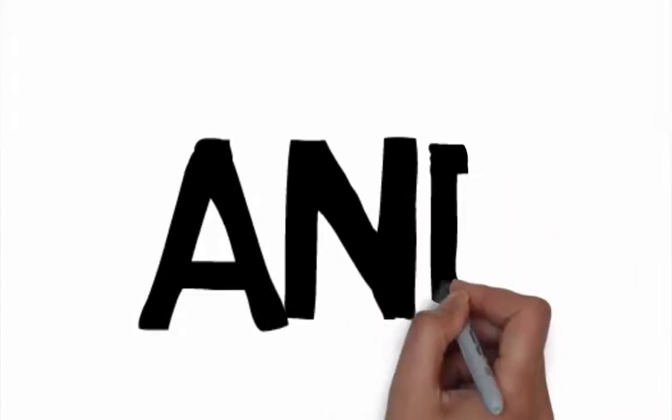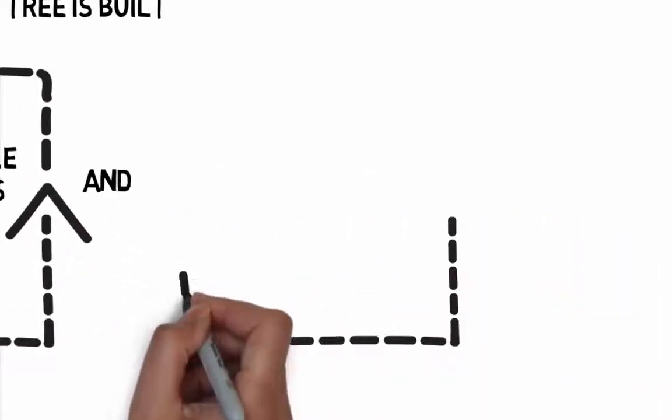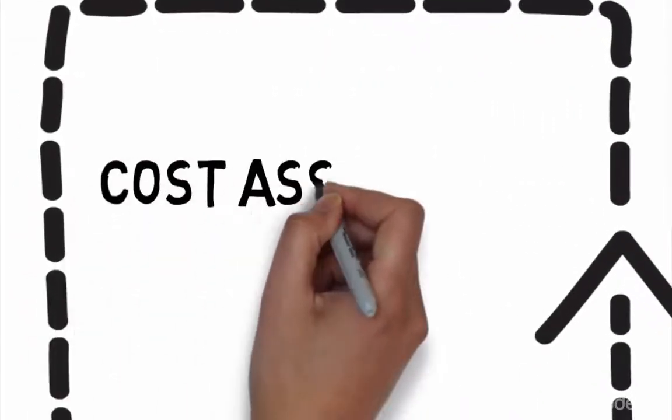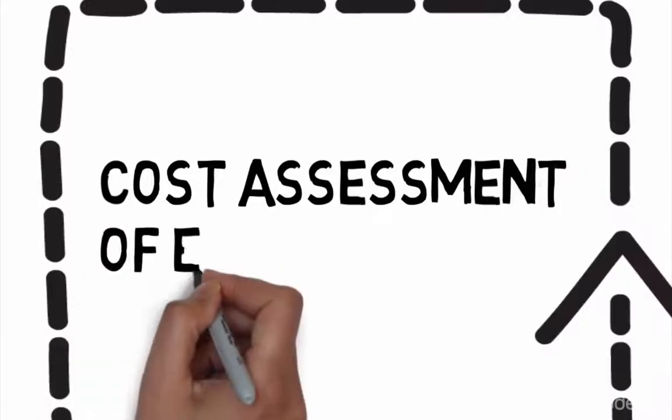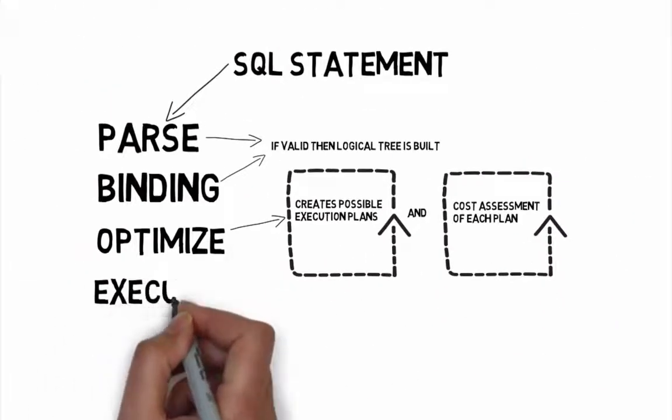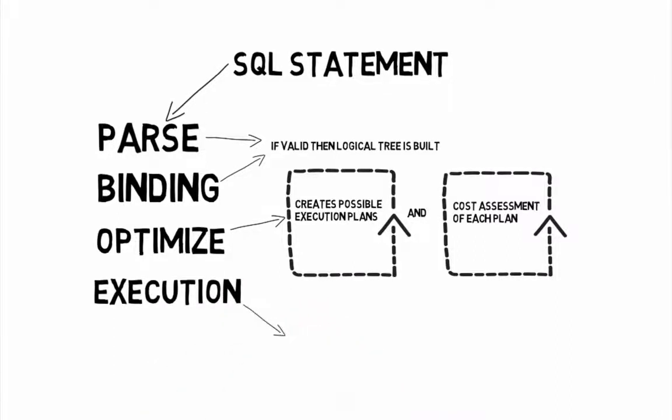The next step is the optimization process, which is basically the generation of candidate execution plans and the selection of the best plan according to their costs. In essence, query optimization is a process of mapping the logical query operations expressed in the original tree representation to physical operations, which can be carried out by the execution engine.